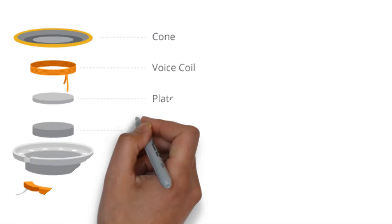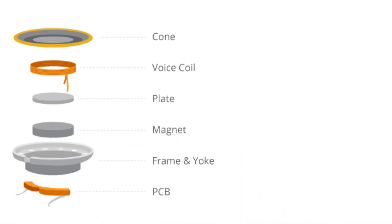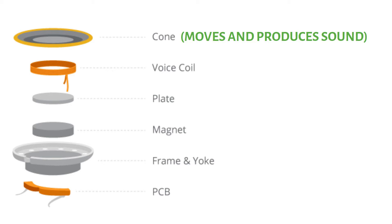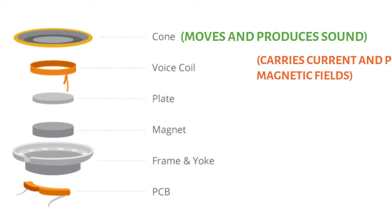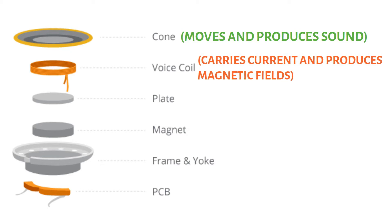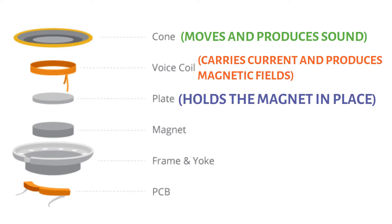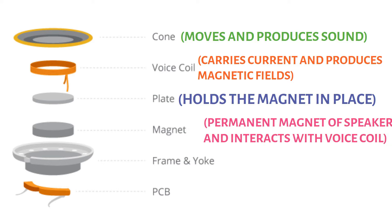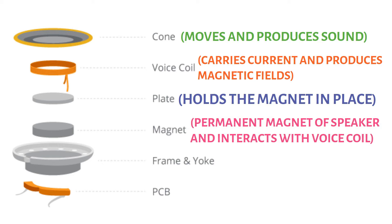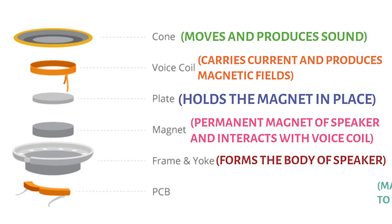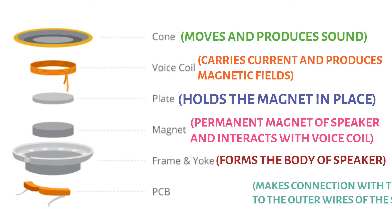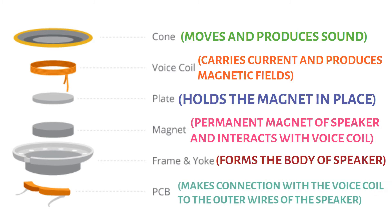The cone or diaphragm moves and produces sound through vibrations. The voice coil carries the current, produces magnetic fields, and pushes and pulls on the diaphragm to produce sound. The pole plate holds the permanent magnet in place. The permanent magnet is made of neodymium and interacts with the voice coil. The speaker frame forms the body of the speaker, and the PCB connects the voice coil to the outer wires of the speaker and to the motherboard of the smartphone.